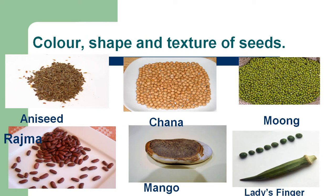Color, shape, and texture of seeds: different seeds have different shapes, sizes, colors, and textures. Some seeds are bigger, like mango seeds, and some seeds are much smaller, like mustard seeds. Moong is green in color, whereas chana is brownish in color. The seeds of lady's finger are rounded in shape, but rajma seeds are cylindrical in shape.